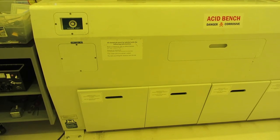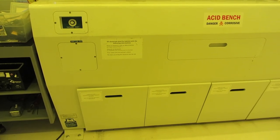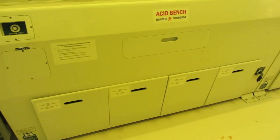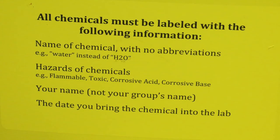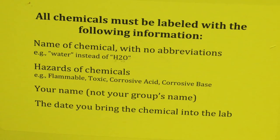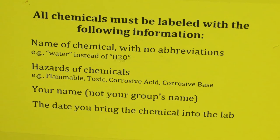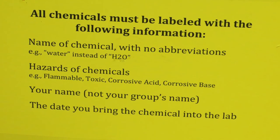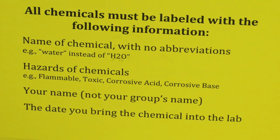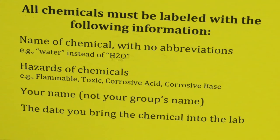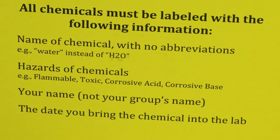If you have any of your own chemicals that you want to store in the lab, you should talk to the lab supervisor about it before you even order them, just to make sure they're acceptable for use in this lab. All chemicals must be labeled with the following information: the name of the chemical with no abbreviations, the hazards of the chemicals, your name and please don't use your group's name, and the date that you brought the chemical into the lab.